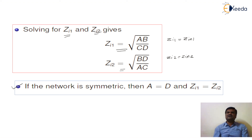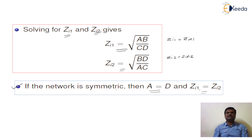These values ZI1 and ZI2 are the image parameter values required for determining important image parameters: voltage ratio, current ratio, and propagation factor. If the network is symmetrical, we put A equal to D, and then ZI1 becomes equal to ZI2. In part 2, we will see the image parameters in terms of ZI1 and ZI2. Thank you.